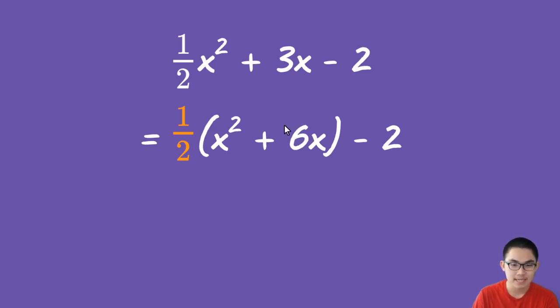The second step is you take the middle number, which is 6, you divide it by 2, and then you square it. So 6 divided by 2 is 3, and 3 squared is positive 9. So you add 9 into the function. When you add 9, you also subtract 9. So you are not changing the function in any way.